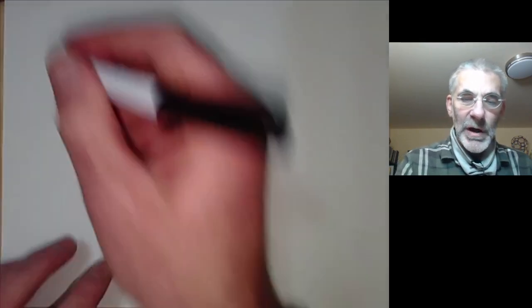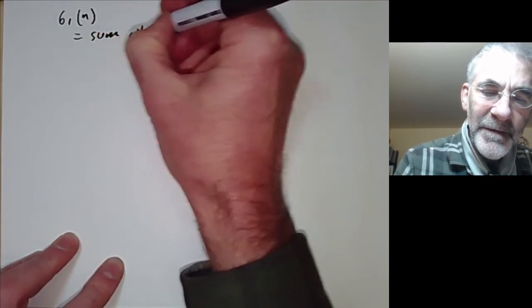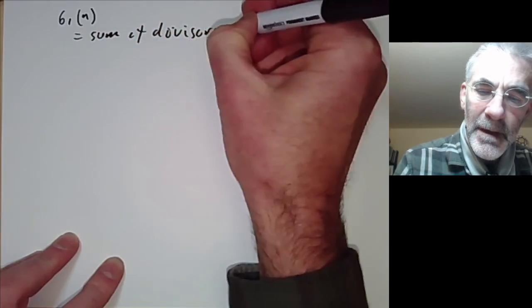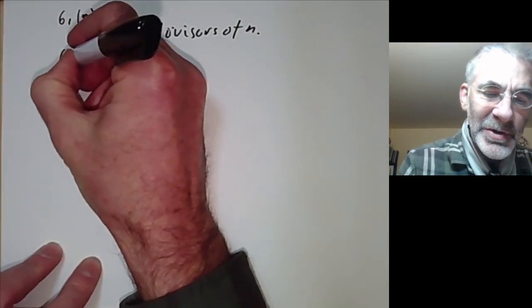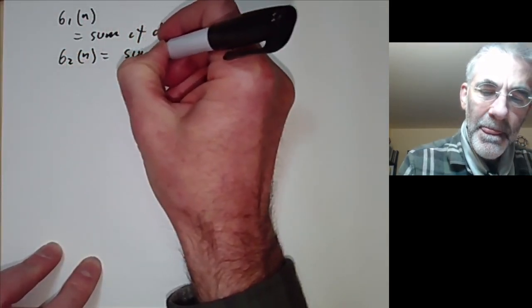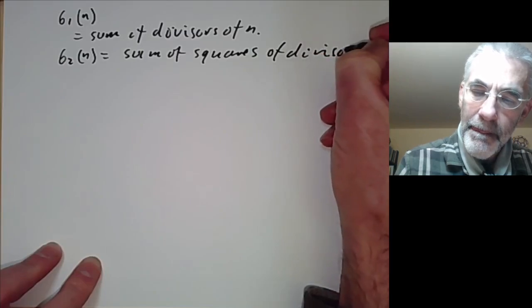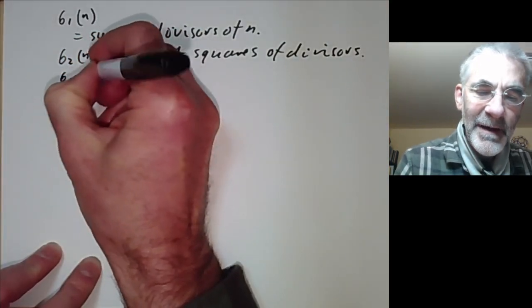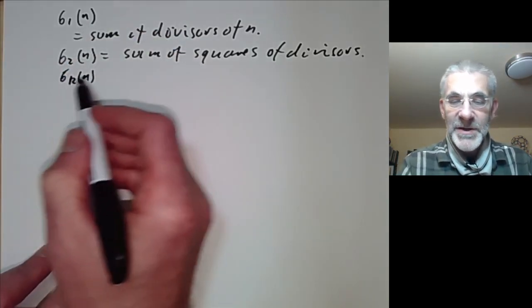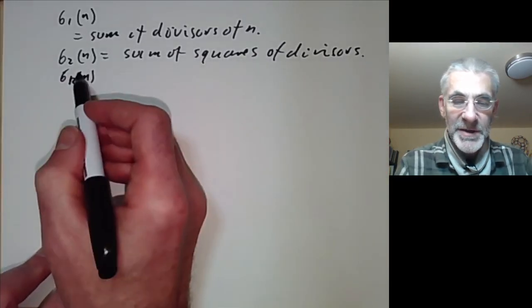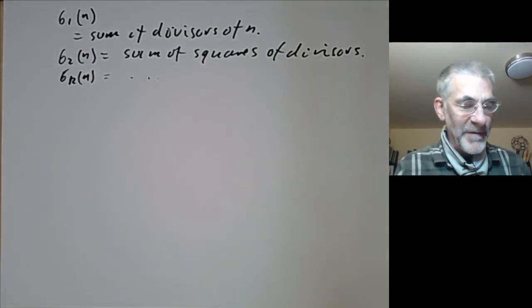Next we consider sigma_1(n), the sum of the divisors of n, and sigma_2(n), the sum of the squares of the divisors. More generally, sigma_k(n) is the sum of the k-th powers of the divisors. In particular, sigma_0(n) is the sum of the zeroth powers of divisors, which is just the count of divisors — that's why we use the subscript 0.